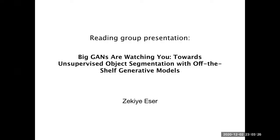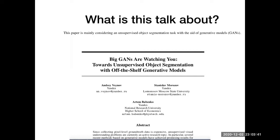Today I would like to talk about a paper called 'Big GANs Are Watching You: Towards Unsupervised Object Segmentation with Off-the-Shelf Generator Models.' The authors are Andrei Voinov, Stanislav Morozov, and Artem Babenko. They also wrote another related paper, and this paper is actually a by-product of that work.